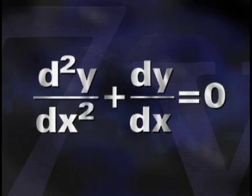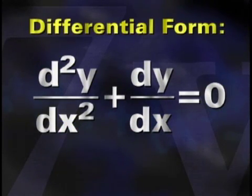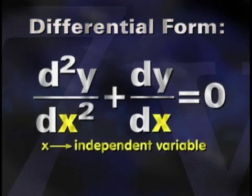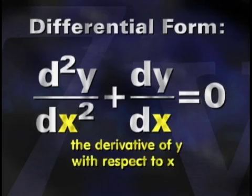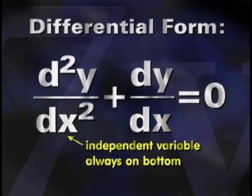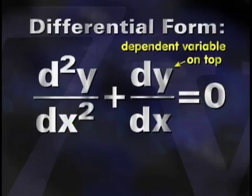If we look closer at the differential form of this differential equation, we can see that x is the independent variable and y is the dependent variable. This is because we are taking the derivative of y with respect to x. The independent variable is always the variable that is on the bottom in differential form, and the dependent variable is the one on top.